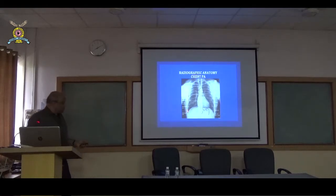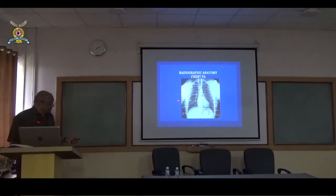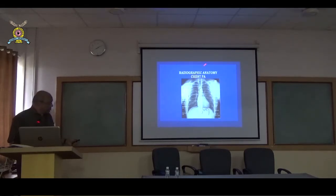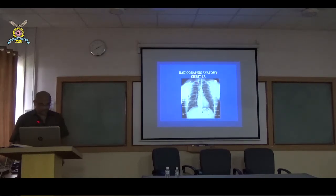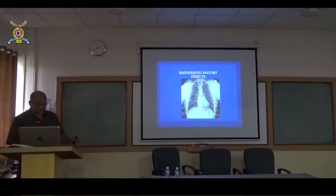When we come to the bony cage, we have to see the upper ends of the humerus on either side, the scapulae, the clavicles, the ribs, the posterior ends of the ribs and the anterior ends of the ribs. This is standard for the adult X-ray as well as the pediatric X-ray.